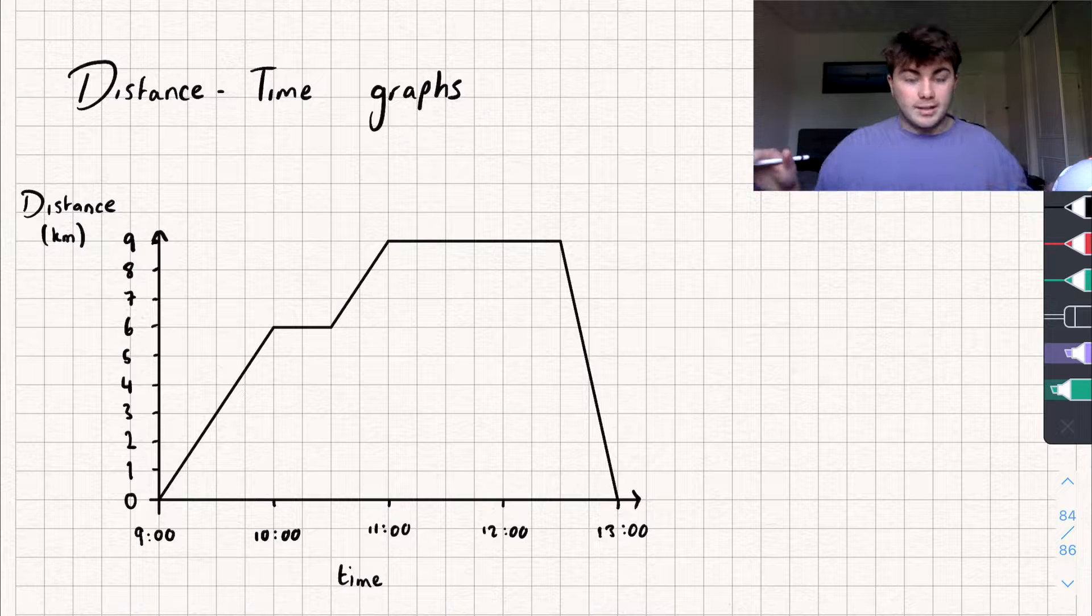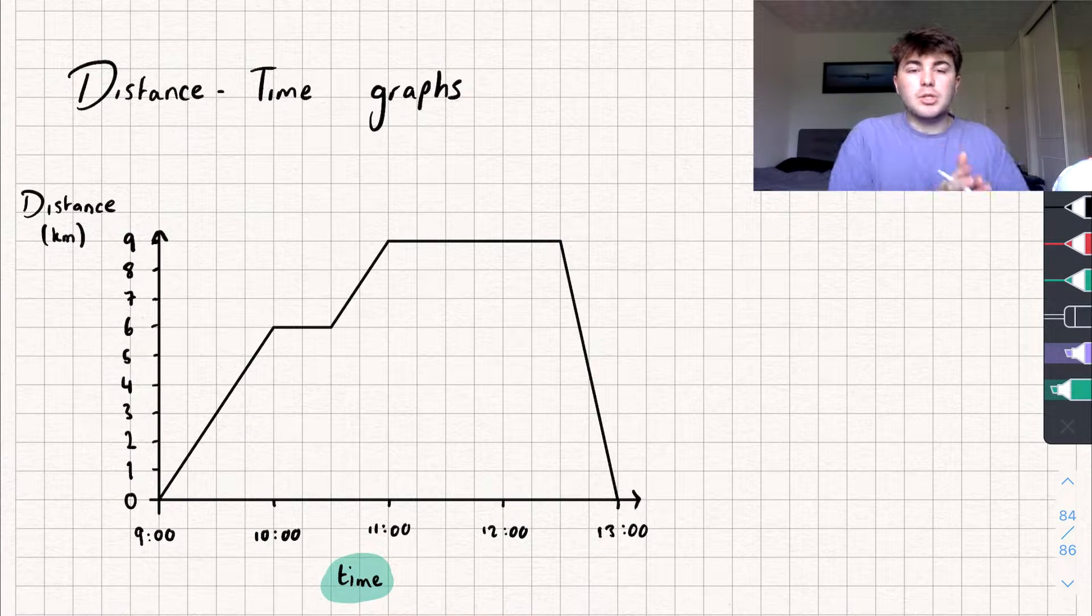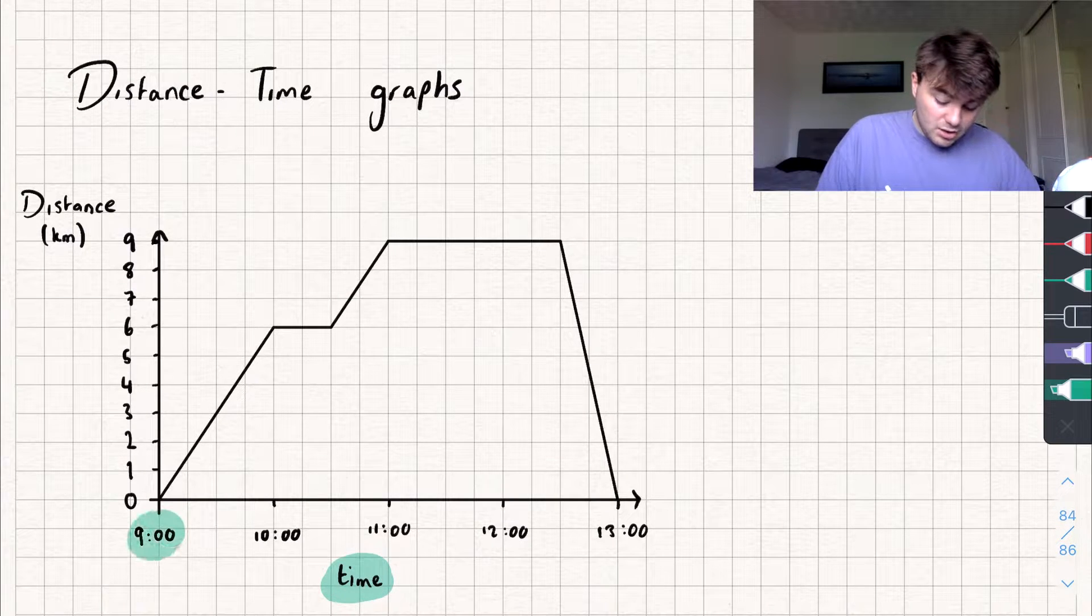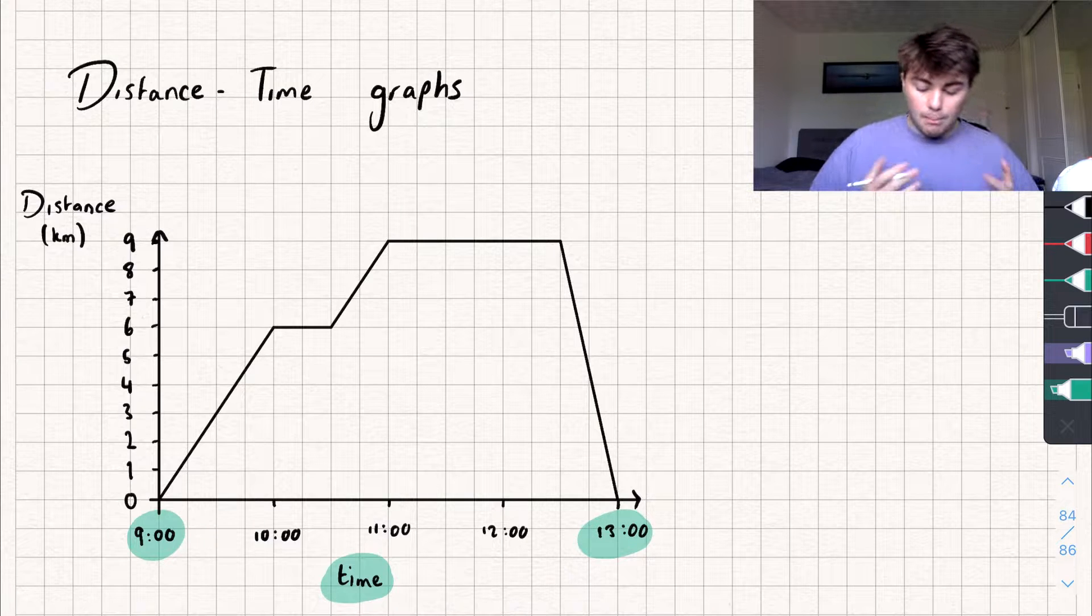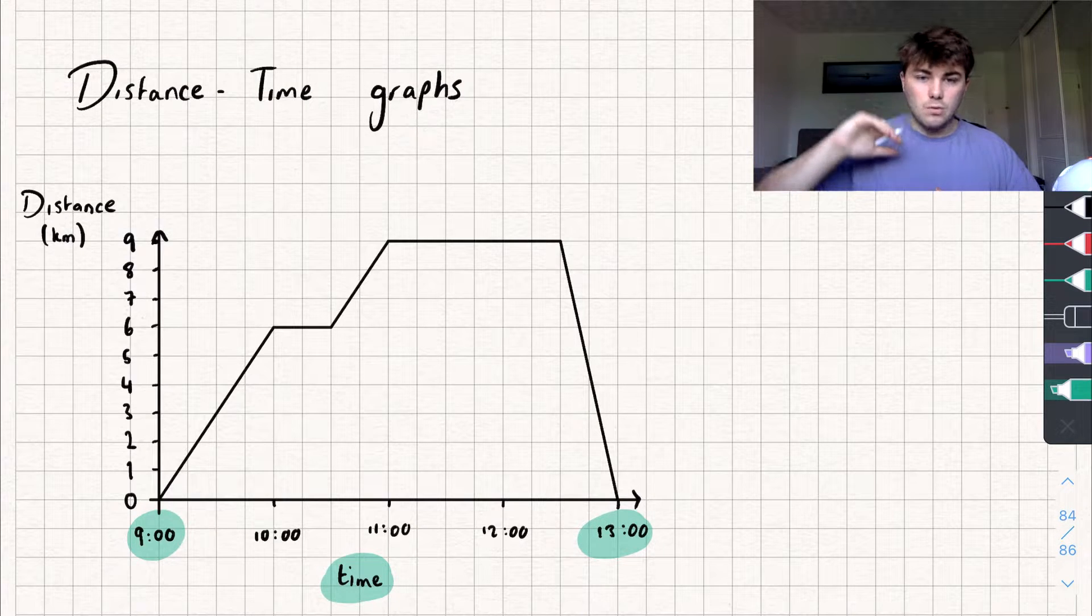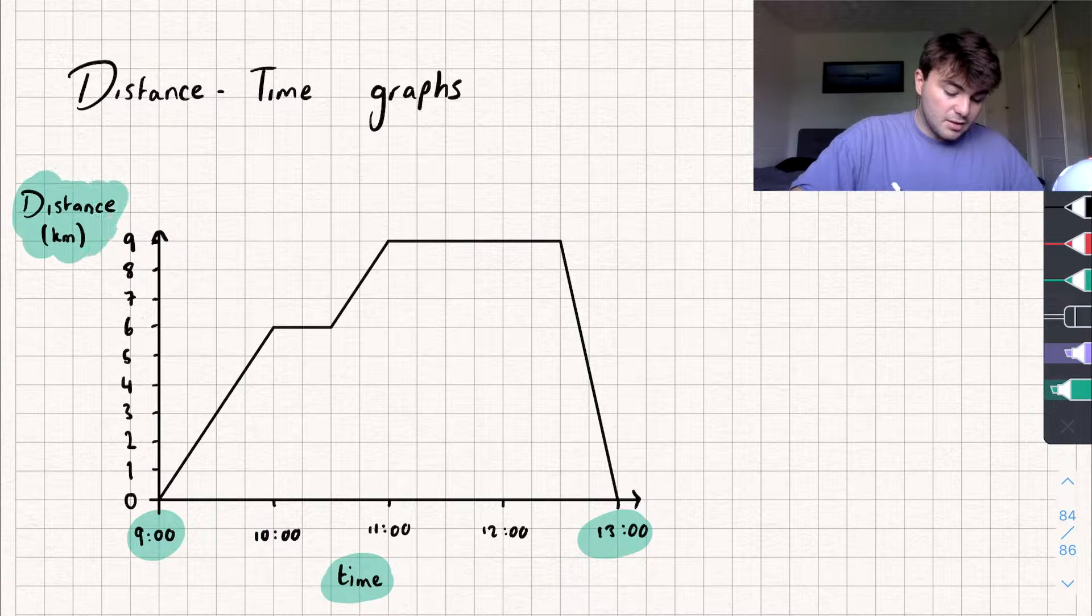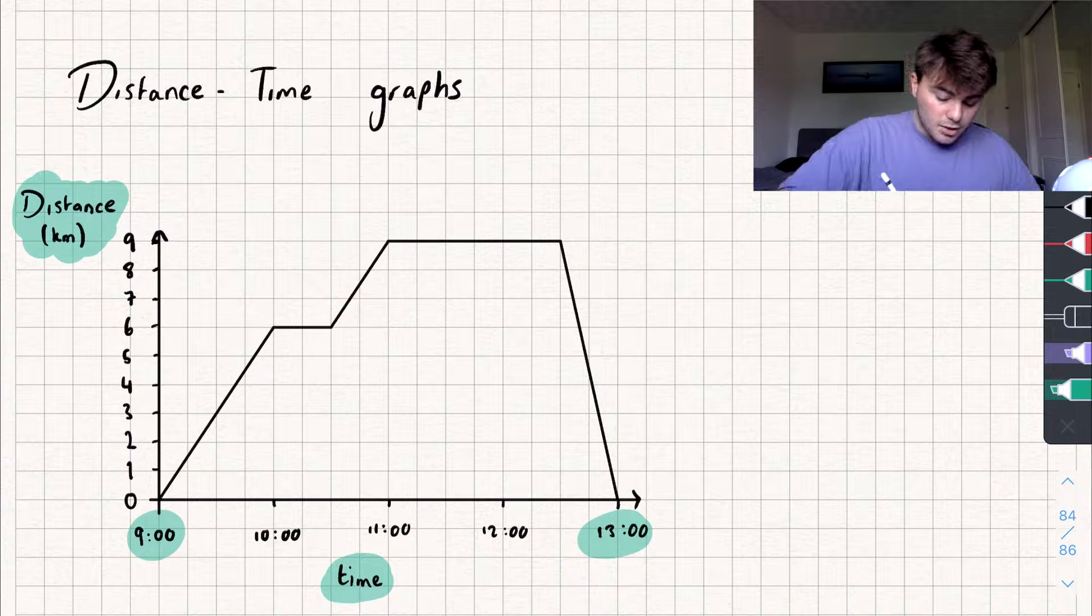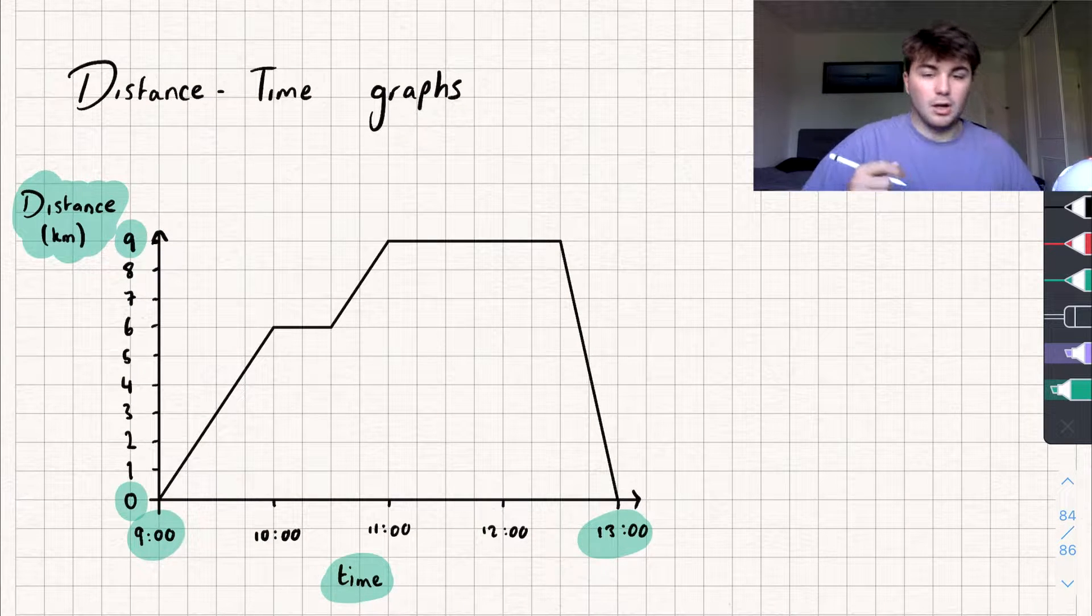On the horizontal or x-axis, this shows how much time is passing. You can see it starts at 9am and goes up until 1pm. On the vertical or y-axis, I've got the distance, which in this case is in kilometers. I've traveled between 0 and 9 kilometers.